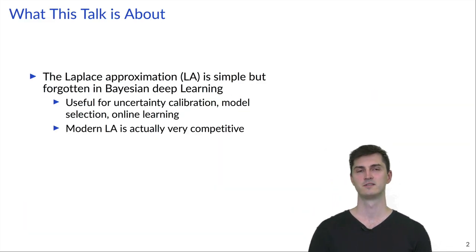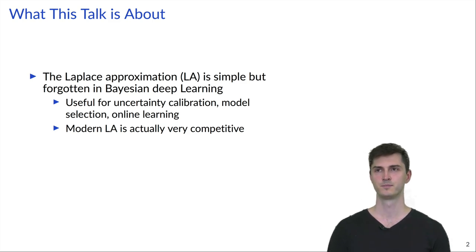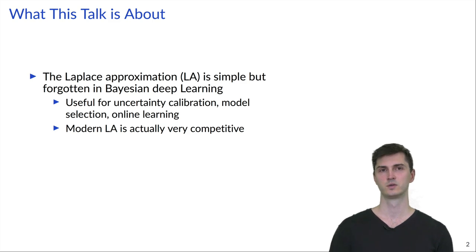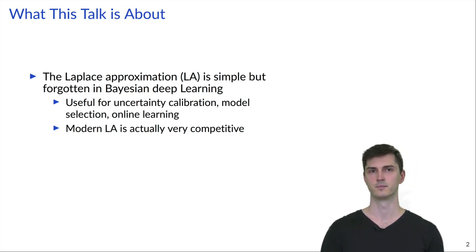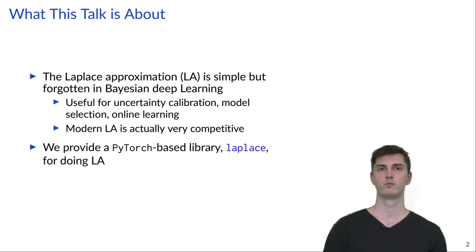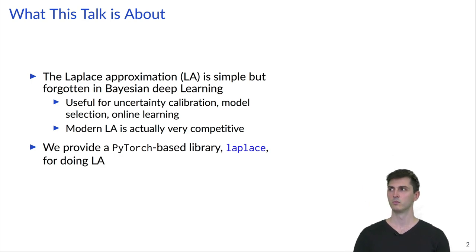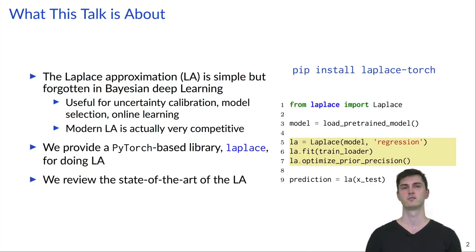The Laplace approximation is a very simple method in Bayesian Deep Learning which has been recently somewhat neglected. It's useful for uncertainty calibration, model selection and online learning and also very competitive compared to other Bayesian Deep Learning methods. In this paper we propose a PyTorch-based library for Laplace approximations. Moreover, we review the state-of-the-art of modern Laplace approximations and show that they perform competitively.